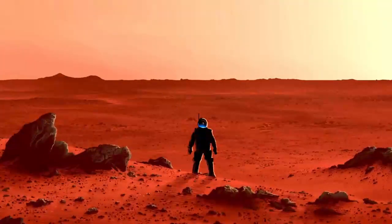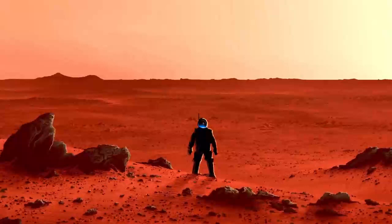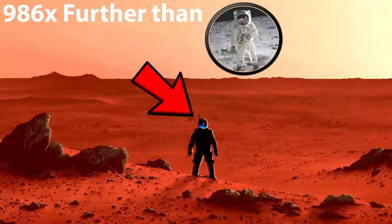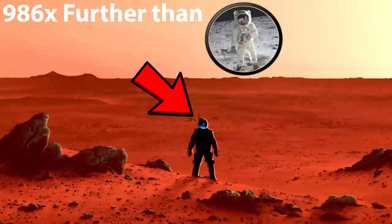That means that whenever humanity finally gets around to landing a human on the planet, that person will be 986 times further away from Earth than the astronauts who landed on the Moon were. In addition,